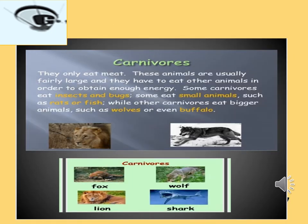The second category is carnivores — they only eat meat. These animals are usually fairly large and must eat another animal to obtain enough energy. Some carnivores eat insects and bugs, some eat small animals such as rats or fish, while others eat large animals such as buffaloes. Examples of carnivores are fox, lion, wolf and shark.